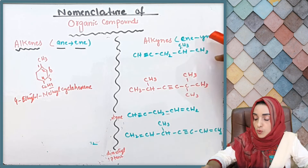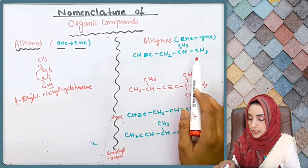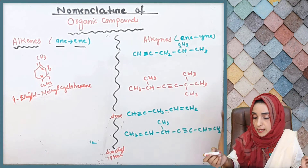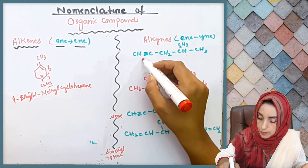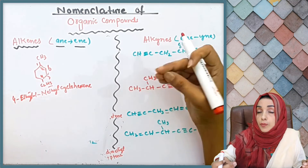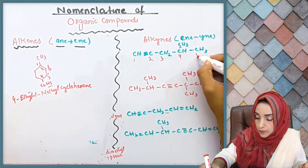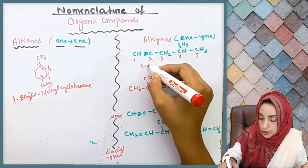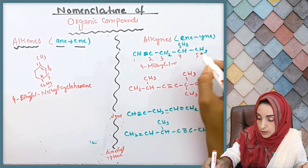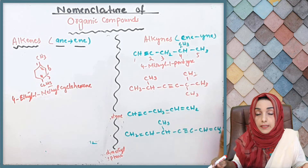When we look at alkynes, the 'ene' is replaced with 'yne'. In the same way, we consider the longest chain as the parent chain. For substituents or bonds, if there is a tie, whichever is nearest — the nearest double or triple bond gets the lower carbon number. So we have: three, four, five — giving us: 4-methyl-1-pentyne.